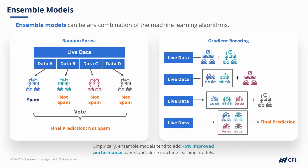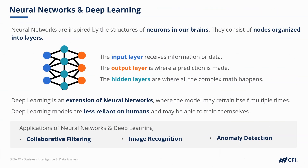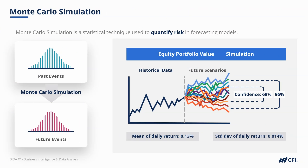In our final chapter, we looked at ensemble models, where models come together to improve predictions. We saw a couple of examples of unsupervised learning, where the goal is instead to group rows or columns in our dataset. You now know the very basics of a neural network, and you've seen the Monte Carlo simulation as an elegant example of what exists in data science beyond just machine learning.